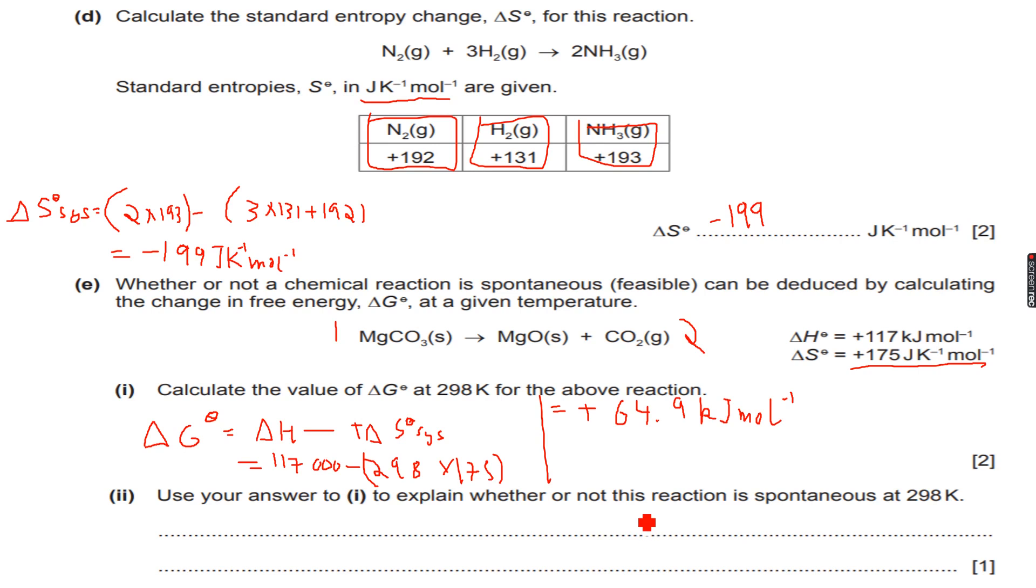Because for it to be spontaneous, delta G naught must be negative. But since it is not negative, it is positive, the reaction is not spontaneous at 298 Kelvin.